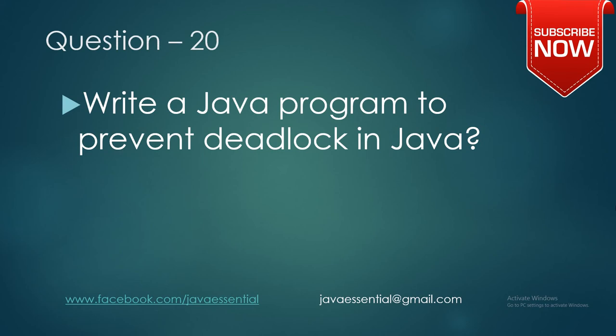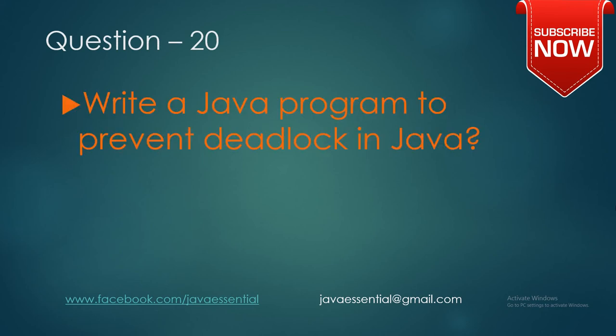Our last question, number twenty, is: write a Java program to prevent a deadlock. This is a coding question, but through it you will understand how deadlock occurs and how you can prevent it. If you are able to write code to prevent a deadlock, you clearly understand why and how deadlock occurs.